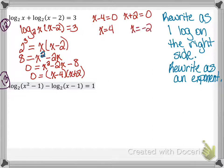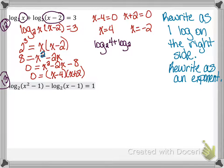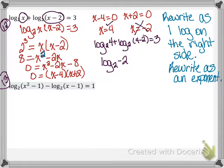When we plug in x = 4: log base 2 of 4 + log base 2 of (4 - 2) = 3 — both arguments are positive, so that works. When we plug in x = -2: log base 2 of (-2) is immediately invalid because we have a negative argument. So we throw that solution out. My only answer is x = 4.